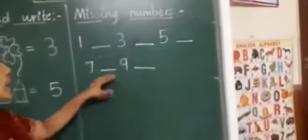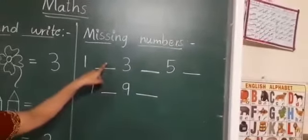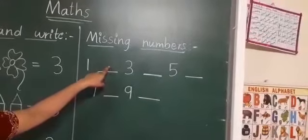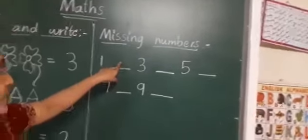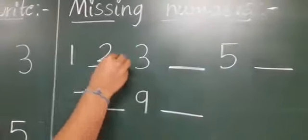Now, tell me. Between one and three, which number comes? Can anybody tell? Yes. The number two. Write here number two.